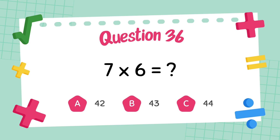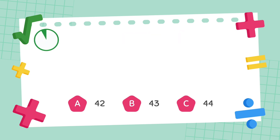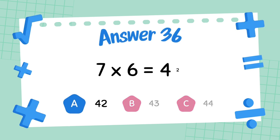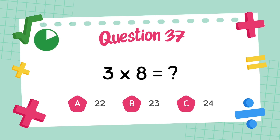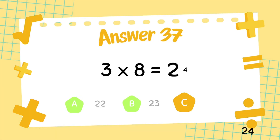What is 7 multiply 6? The answer is 42. What is 3 multiply 8? The answer is 24.